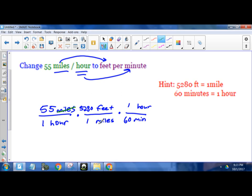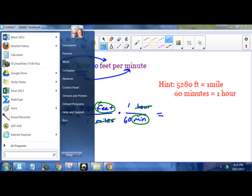And now let's see how our units cancel. So the word miles cancels with the word miles. The word hours cancels with the word hours. So our final answer will have feet per minute. And that's exactly what we wanted. To find out what the number is, you just have to multiply straight across. So 55 times 5280 times 1.